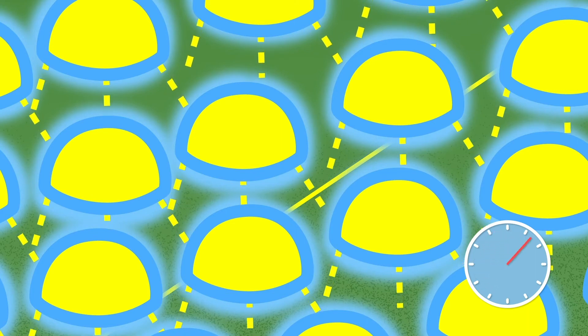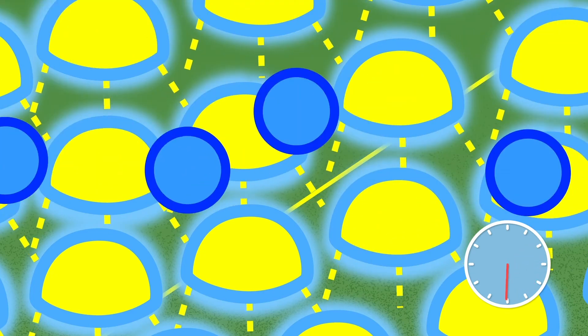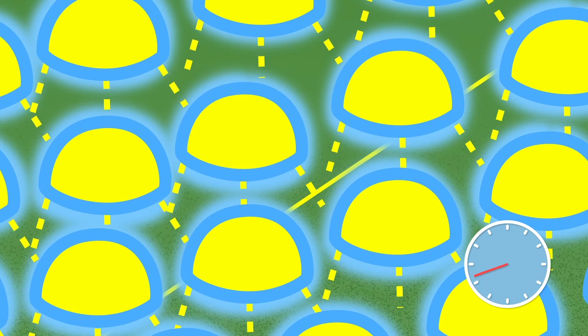This slows evaporation, giving the pesticide time to absorb, and protects the droplet from rainfall or overhead irrigation.